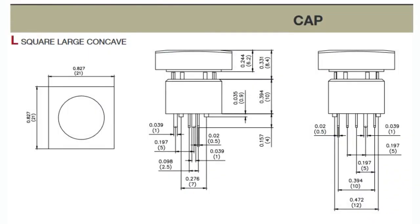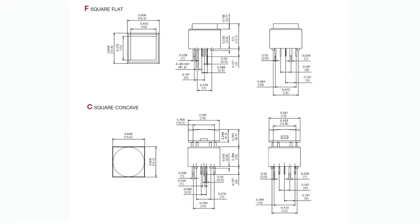Next up, the cap — the cap is kind of the most noticeable, other than the contacts. The cap is very noticeably different. So this is the large square concave. And then there's also the square flat and the square concave. If you can't quite see the difference, I'll show all three of them on the overhead as well.